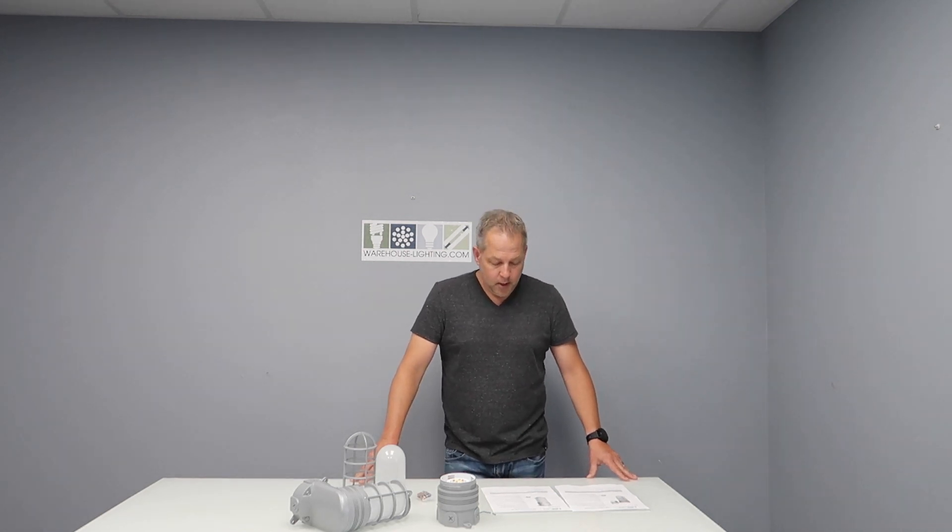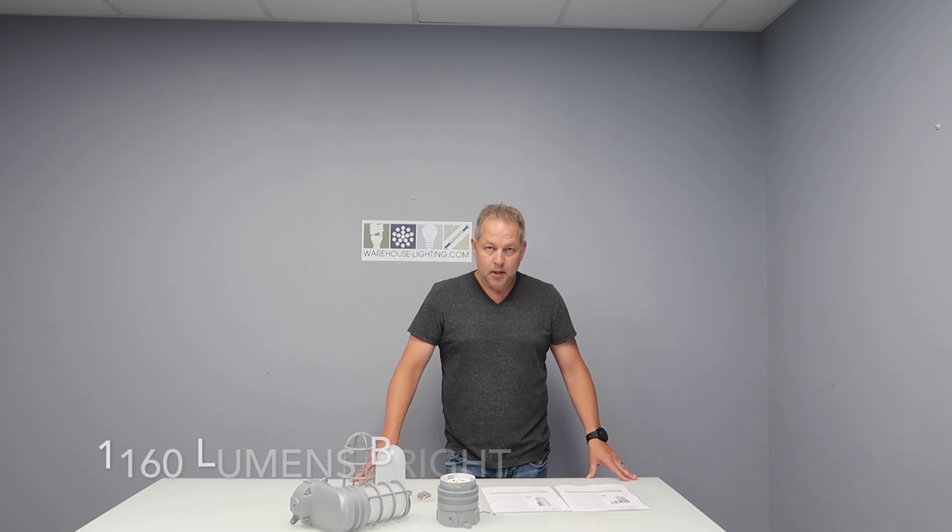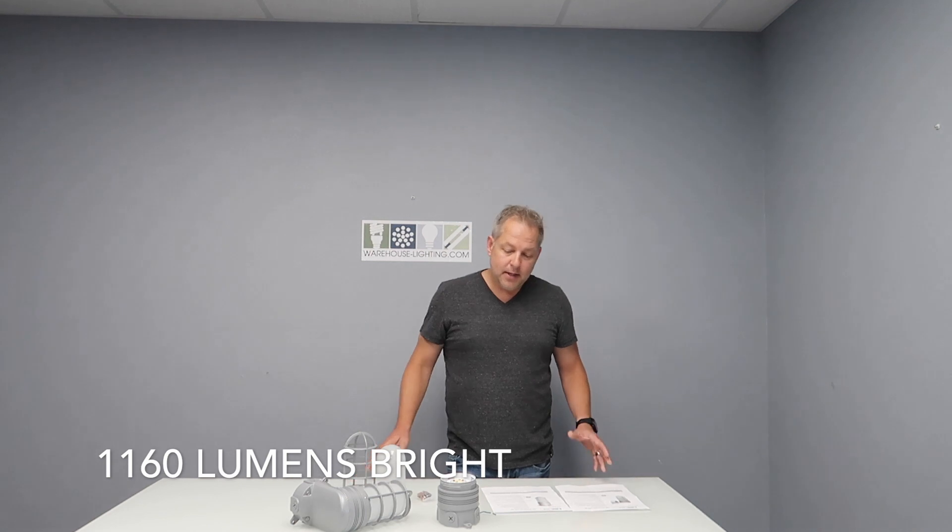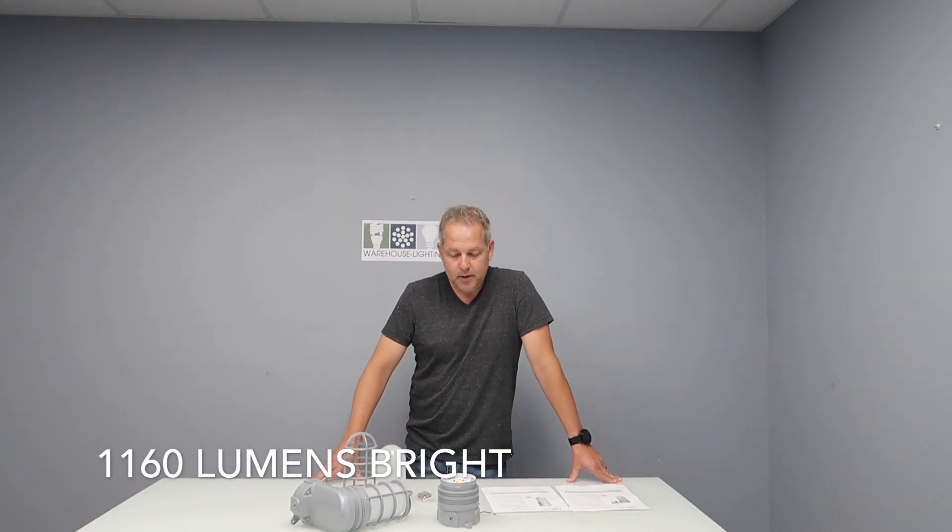Or the ceiling and the fixture itself. It is 1,160 lumens - it's bright. This is a 4000K version. We find that that's the most used color temp for this type of lighting, so we bring those in.